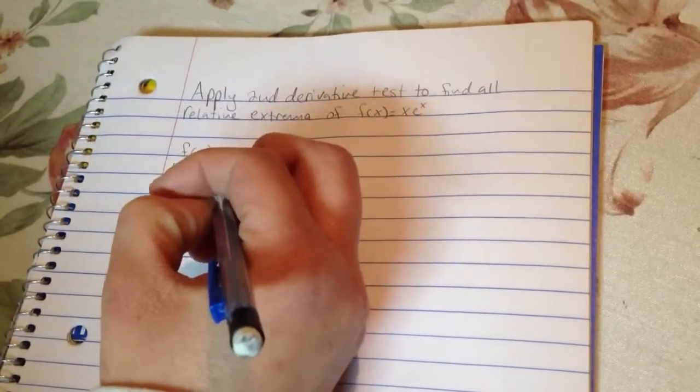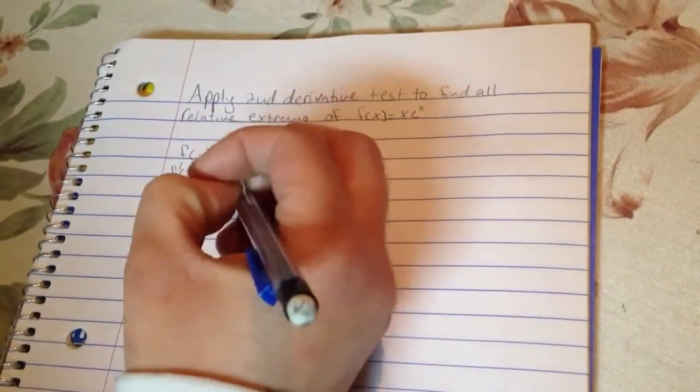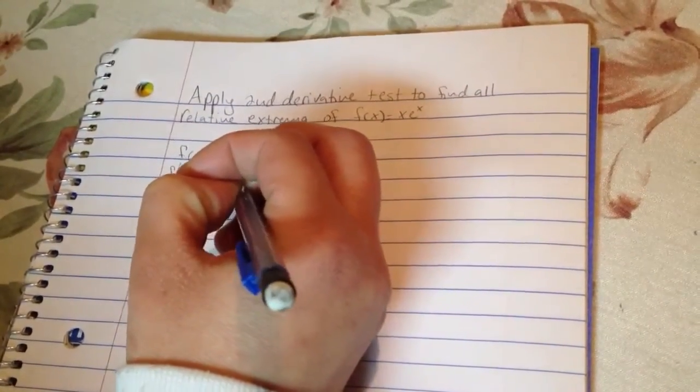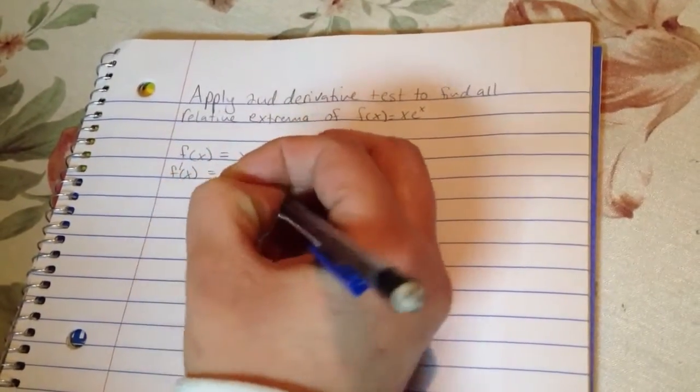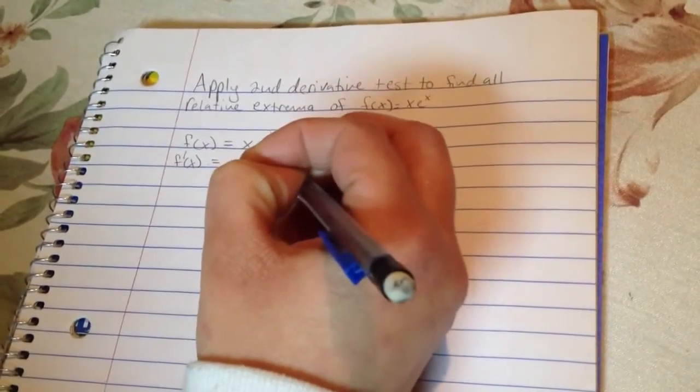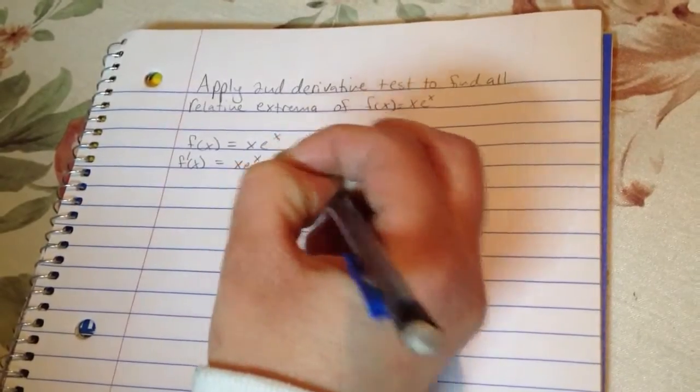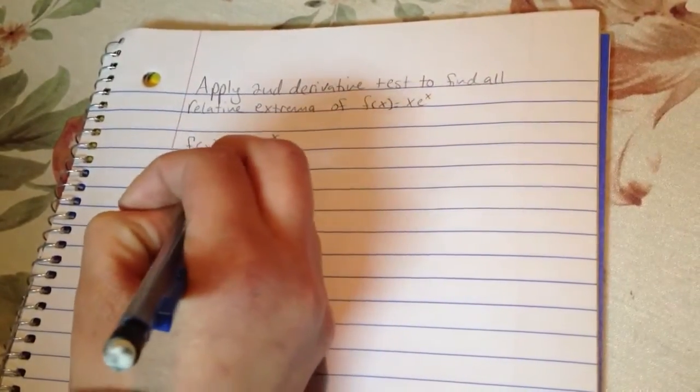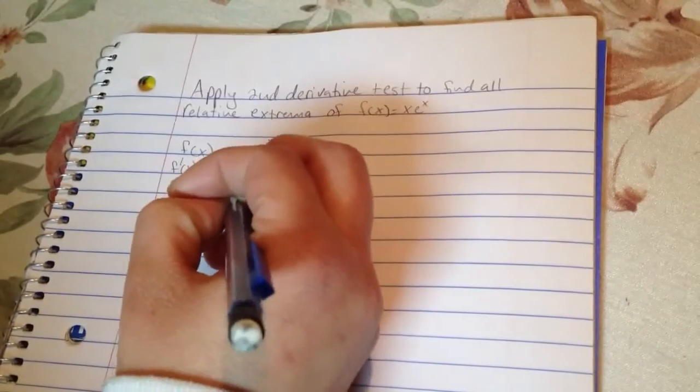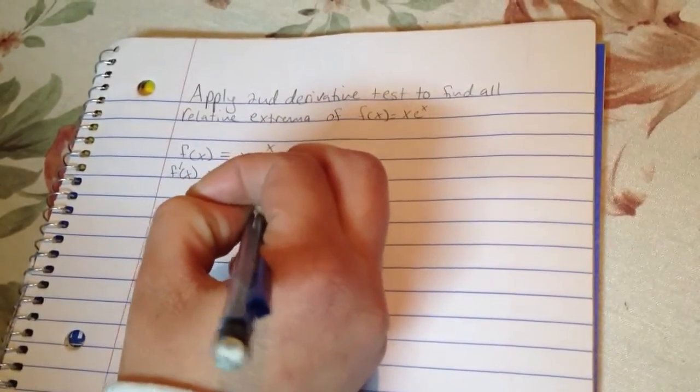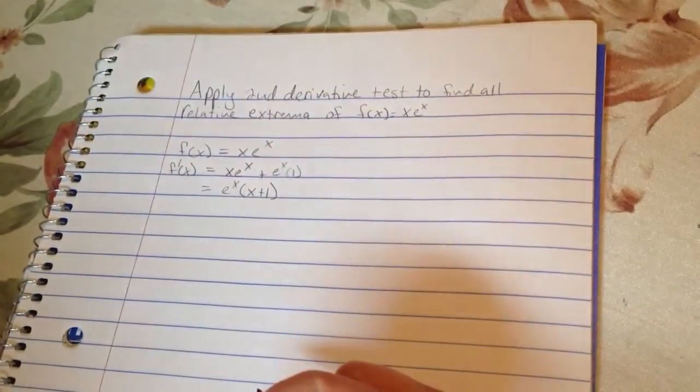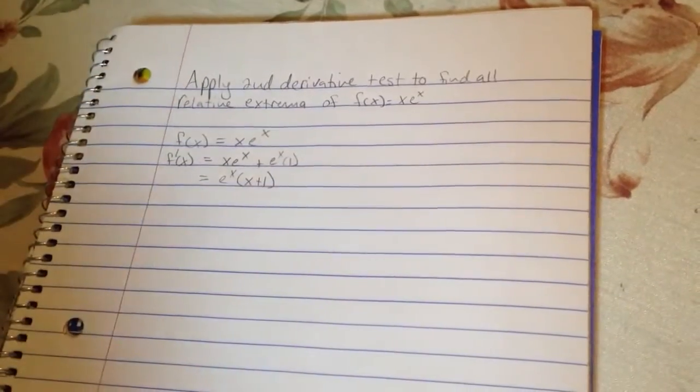So f prime is going to be equal to x times e to the x plus e to the x times 1. Factor it out, so we'll have e to the x times x plus 1. So this is our first derivative.